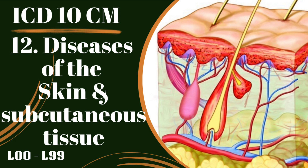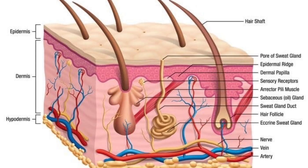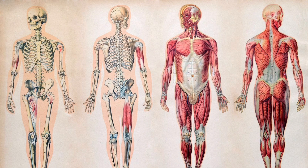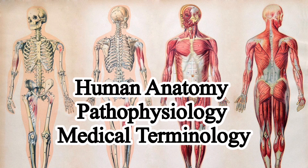Today's topic is Chapter 12: Diseases of the Skin and Subcutaneous Tissue, L00 to L99, which covers the integumentary system. The integumentary system includes the epidermis, dermis, hypodermis, associated glands, hair, and nails. In general, it serves as a barrier protecting internal organs from external harm such as organisms or injury, regulates body temperature, and maintains body fluids. All medical coders should be aware of basic anatomy and pathophysiology.